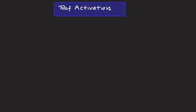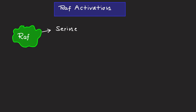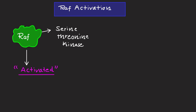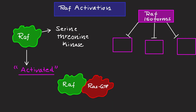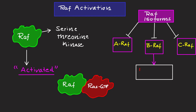Now let's talk about RAF activation. RAF is a serine-threonine kinase that becomes activated upon binding to RAS-GTP. There are multiple RAF isoforms: ARAF, BRAF, and CRAF. BRAF is particularly significant due to its frequent mutations in cancers such as melanoma and other cancers.